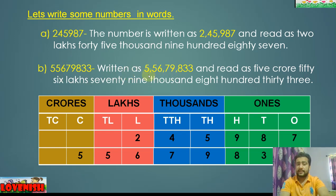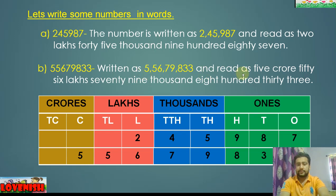For the next number, first is the group of ones, then the group of thousands, then the group of lakhs, then the group of crores. So we read it as: five crore fifty-six lakhs seventy-nine thousand eight hundred thirty-three.